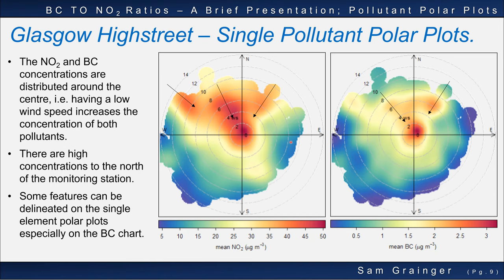With all the preamble done, let's look at some charts. The charts presented here are two single-element bivariate polar plots of NO2 on the left and BC on the right. These charts show the highest concentrations of air pollution recorded when wind speeds were below 2 metres per second and blowing from the north, though a large elliptical increase in NO2 concentrations was present when winds blew from the northwest at wind speeds up to 6 to 8 metres per second. Generally, the higher the wind speed, the less concentration of air pollution was recorded.